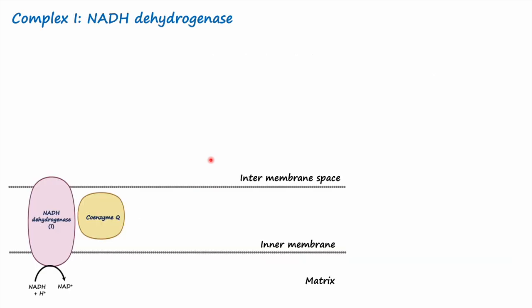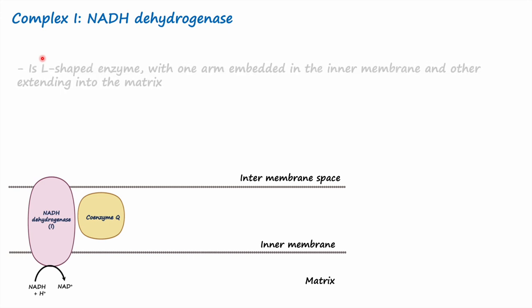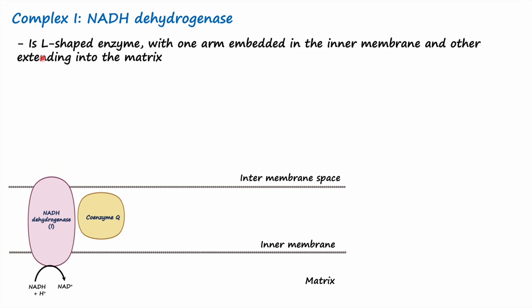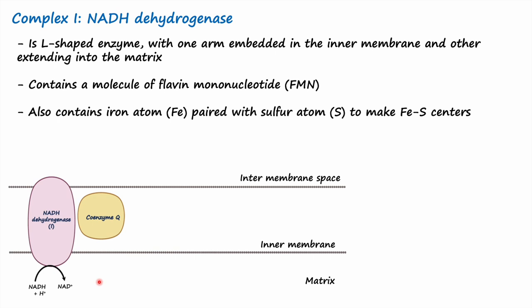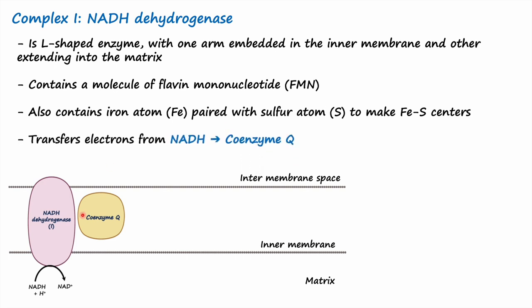The first enzyme in the electron transport chain is NADH dehydrogenase, also called Complex 1. Complex 1 is an L-shaped enzyme and a transmembrane protein, with one arm embedded in the inner membrane and the other arm extending into the mitochondrial matrix. It contains a coenzyme called flavin mononucleotide (FMN) to which it is tightly bound, and it also contains iron atoms paired with sulfur atoms to form iron-sulfur centers. Most importantly, it transfers electrons from NADH to coenzyme Q.